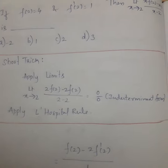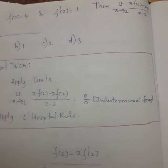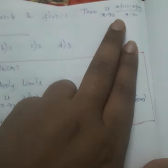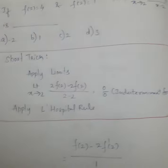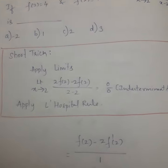The question says if f of 2 is equal to 4 and f dash of 2 is equal to 1, then limit x tends to 2, x into f of x minus 2 times f of x divided by x minus 2. He has given 4 options: minus 2, 1, 2, and 3.